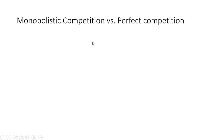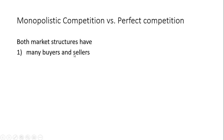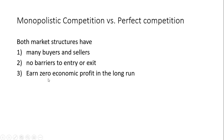Monopolistic competition versus perfect competition: both market structures have many buyers and sellers, both have no barriers to entry or exit, and in both market structures, firms earn zero economic profit in the long run.